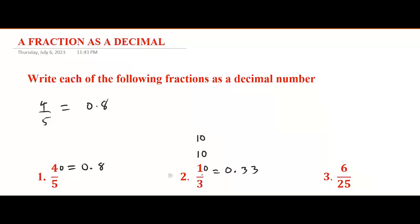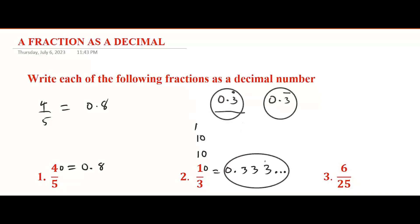If you observe carefully, this is a recurring decimal number — three keeps showing up. So you cannot continue indefinitely. What you need to do is put a sign of ellipses — three dots — to show that three is a repeated digit. So 1/3 = 0.333...